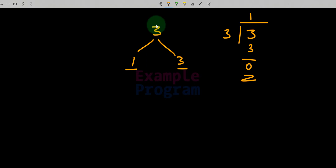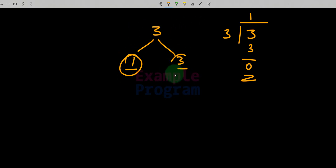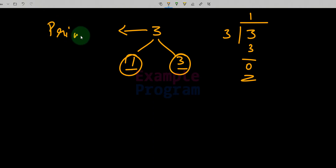Since this number 3 is a natural number greater than 1 and it has exactly two factors — 1 and the number itself — we can say that this number 3 is a prime number.